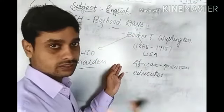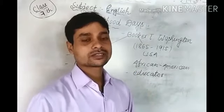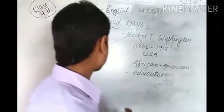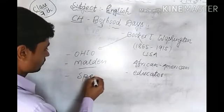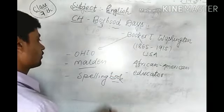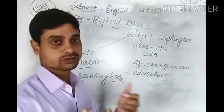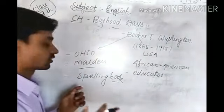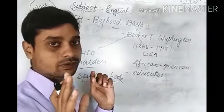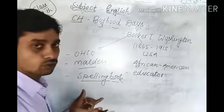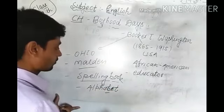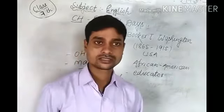Booker T. Washington told his mother, 'Please give me an alphabet book.' His mother was poor, but she tried to get a spelling book. Anyhow, she managed to get a very old spelling book that contained the alphabet. After that, Booker T. Washington started to study.